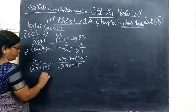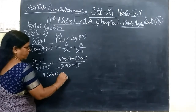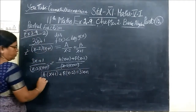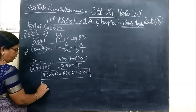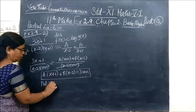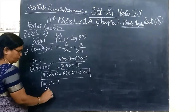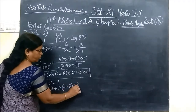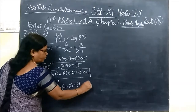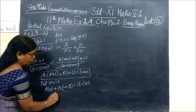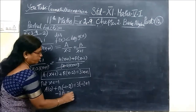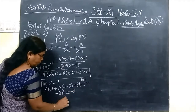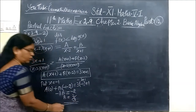Now cancel this. You want to find the value of A and B. Now cancel this. We substitute x equal to minus 1. So minus 3B equal to minus 3 plus 1 minus 2. Minus minus cancel. So B equal to 2 by 3.